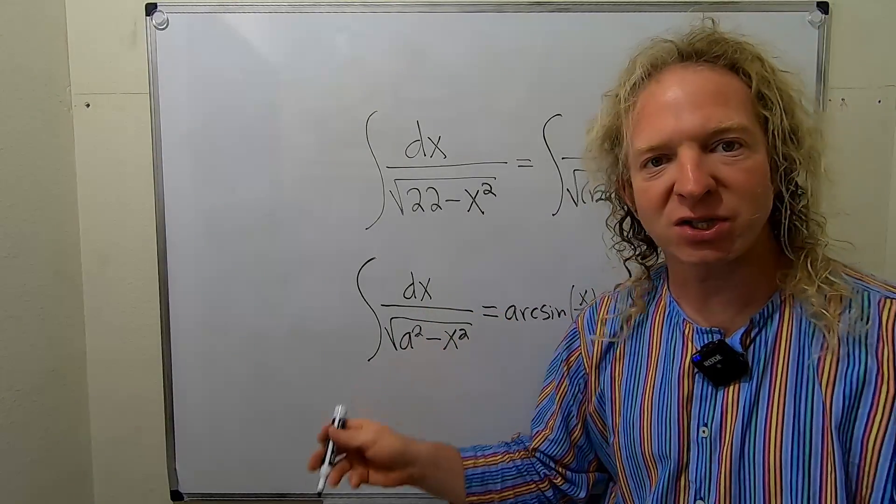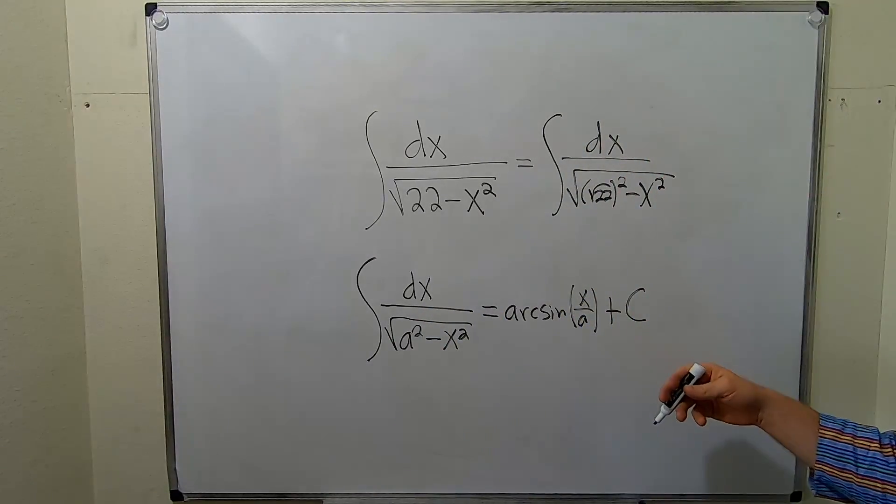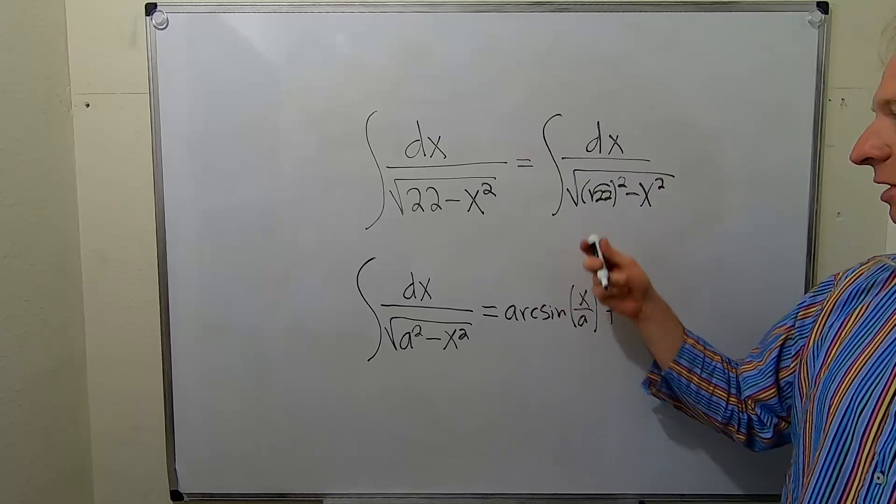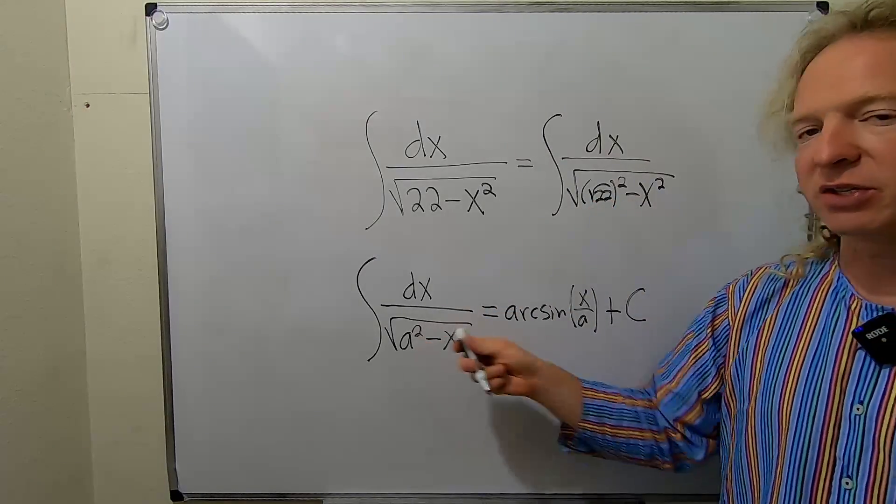Boom. And so now it matches and so now everything is perfect and we're good and we can apply the formula because a now is the square root of 22.